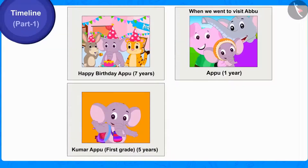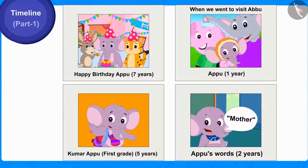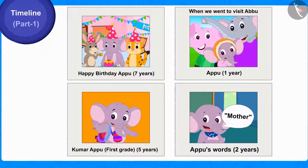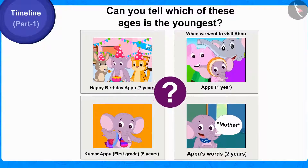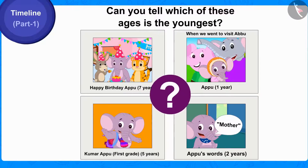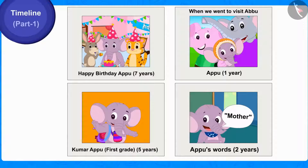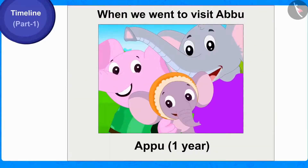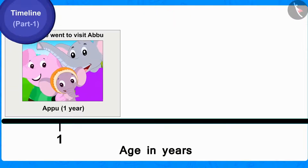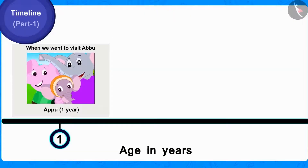Children, here we have four pictures of Appu and his age in those pictures. Can you tell which of these ages is the youngest? Out of these, the picture of Appu which was taken when Appu was one year old will be shown first on the timeline by writing one year on it like this.